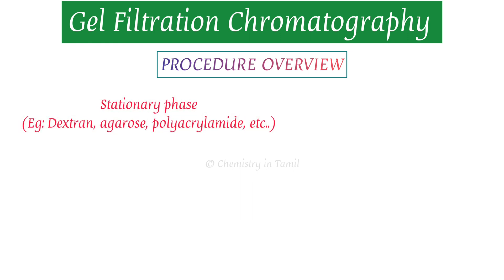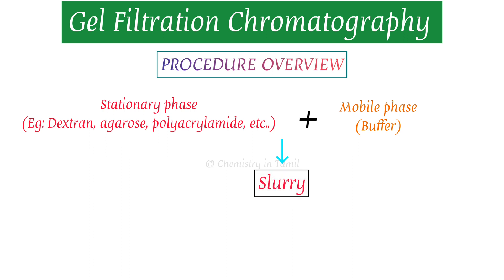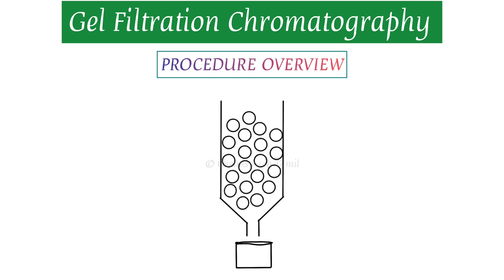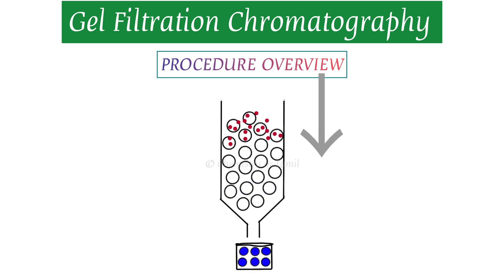Now the overall procedure: the stationary phase includes dextran, polyacrylamide gel, and agarose. First, you prepare a slurry or gel from the stationary phase material. Then, you add the gel to a glass column, packing it to about three-quarters full. Load the sample and add the mobile phase. Separation occurs by gravitational force, similar to column chromatography.